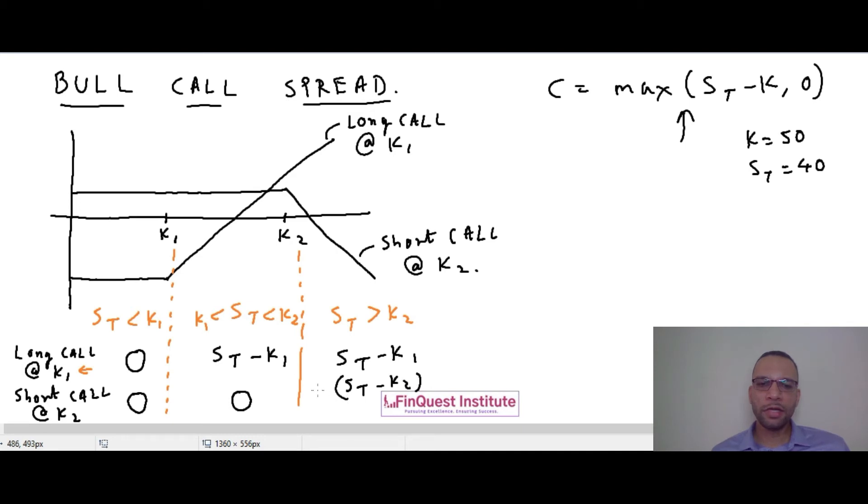However, in this case there will be a negative sign in front of this. The negative sign is used to signify that this is a short call position. So you have minus into bracket the call payoff which is ST minus K2.